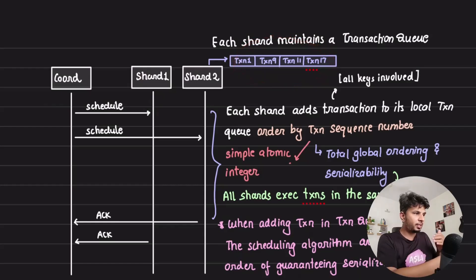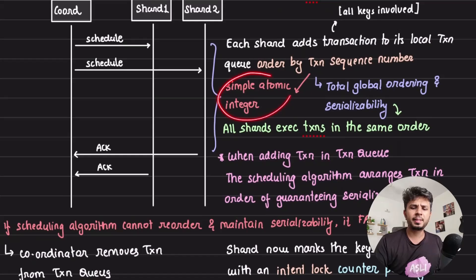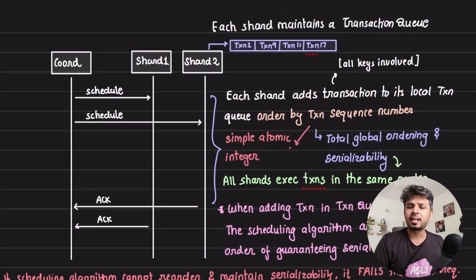This transaction queue has whenever a coordinator thread is sending a transaction, it says hey, I want to affect this key and this key. You own this key, please schedule a transaction. When your shard thread gets it, it would put that transaction in a transaction queue. When it puts the transaction in a transaction queue, it needs to know which transaction is it. So every transaction is given a simple atomic integer identification for that transaction: transaction 1, transaction 9, transaction 11, transaction 17, something on those lines.